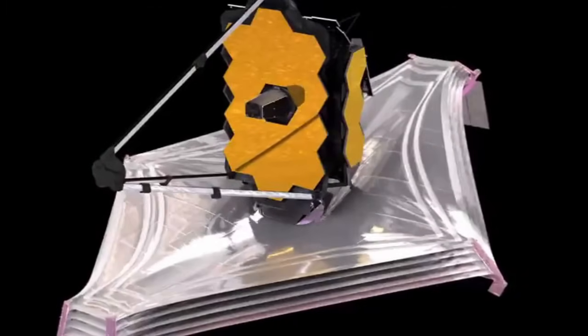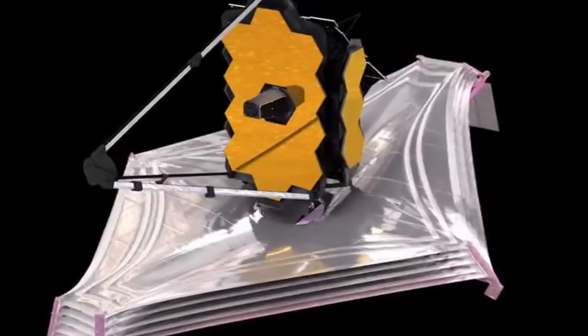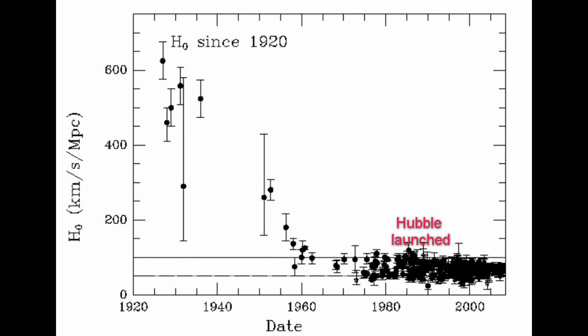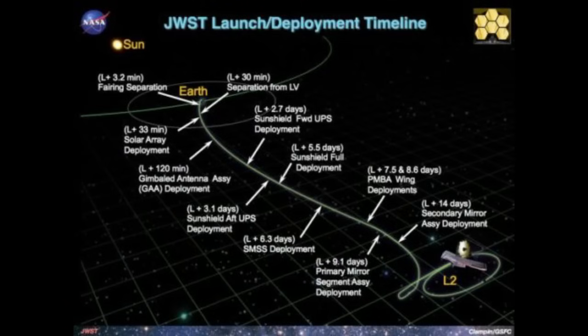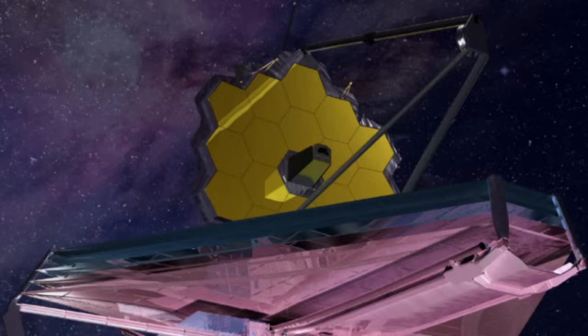The James Webb Space Telescope was hyped as Hubble's successor. Since Hubble's primary job was to lock down the age of the universe, you would expect James Webb to assume the mantle and resolve the situation. It did not.